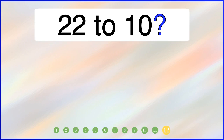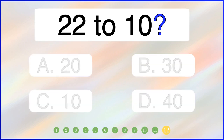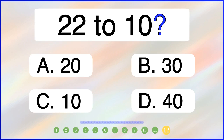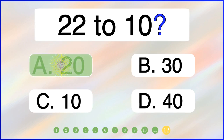What is 22 rounded to the nearest 10? The correct answer is option A: 20.